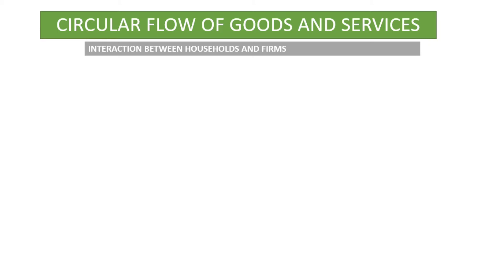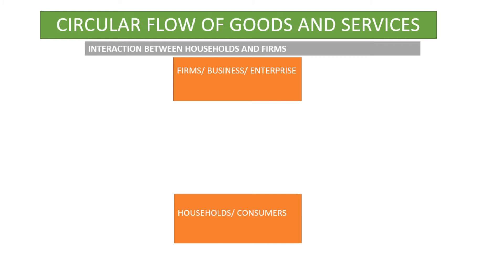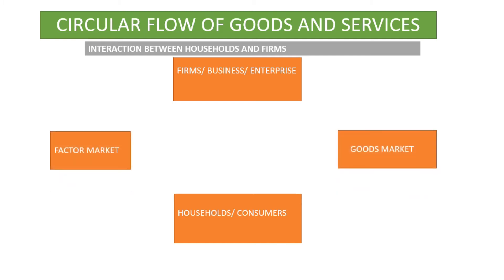Let us look at the flow of goods and services. We are focusing on the interactions between the households and firms. Firms are also known as the businesses or the enterprises. Households are also known as the consumers. And we have got two markets in this economy, namely the goods market and the factor market.